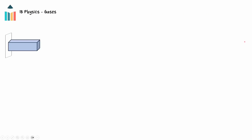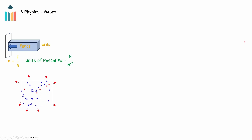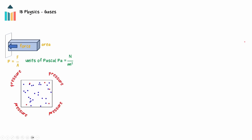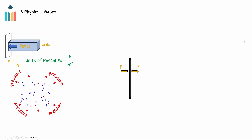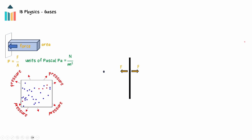Pressure is a scalar quantity defined as force divided by area, with the SI unit of the Pascal — a Newton per meter squared. At a microscopic level, the pressure of a gas is due to collisions between the particles and the container. When particles collide with the walls, they undergo a change in momentum, or impulse. This impulse arises from a force from the walls on the particles, and in turn the particles apply a force on the walls, leading to the pressure on the container.